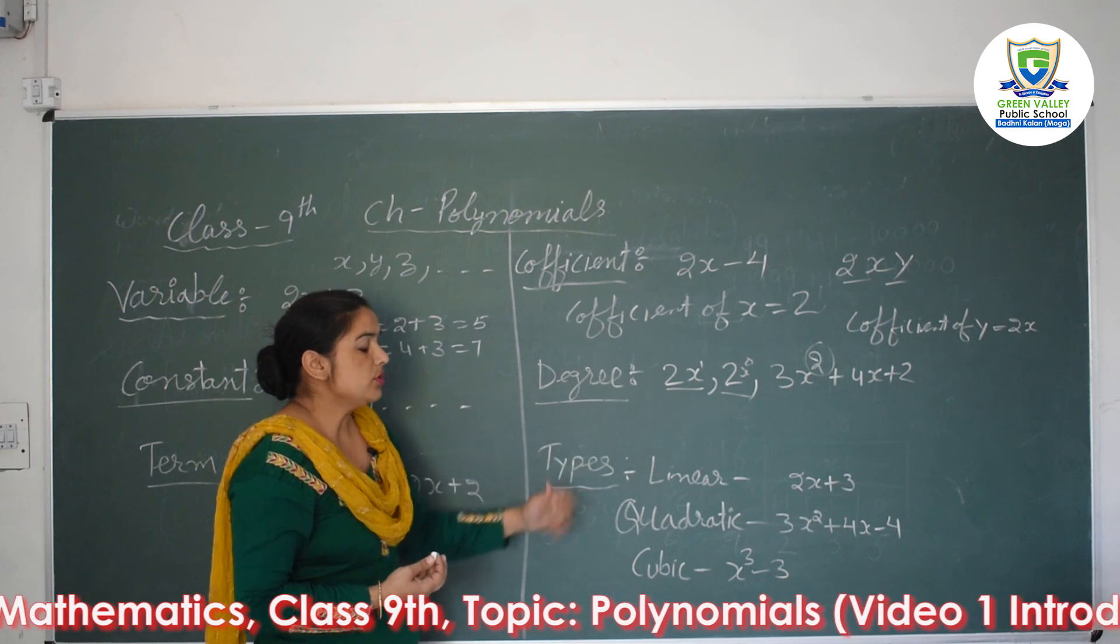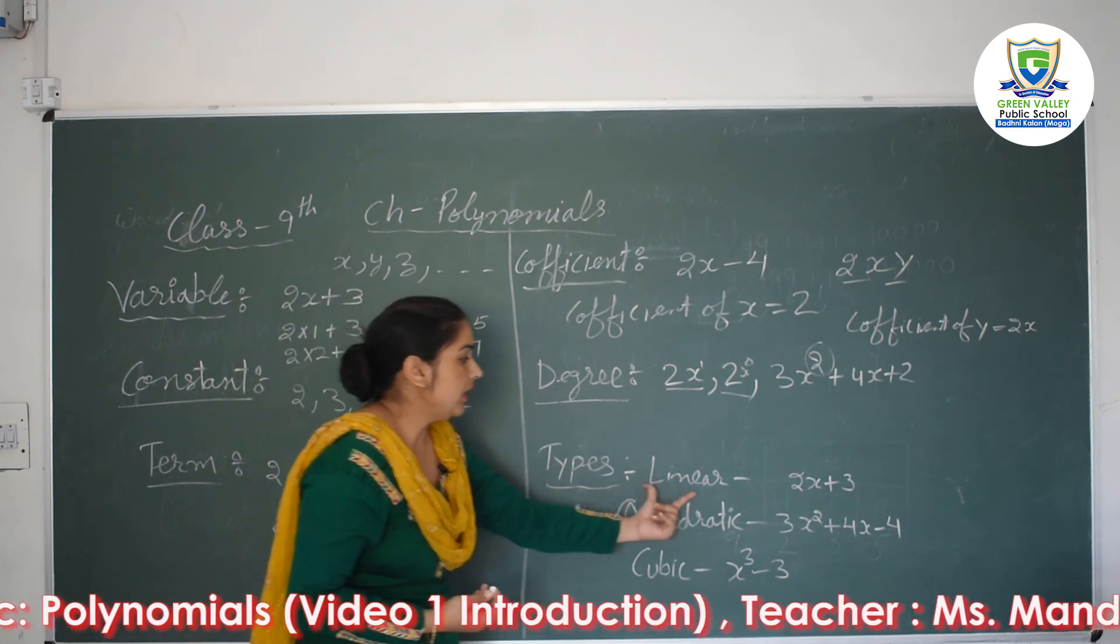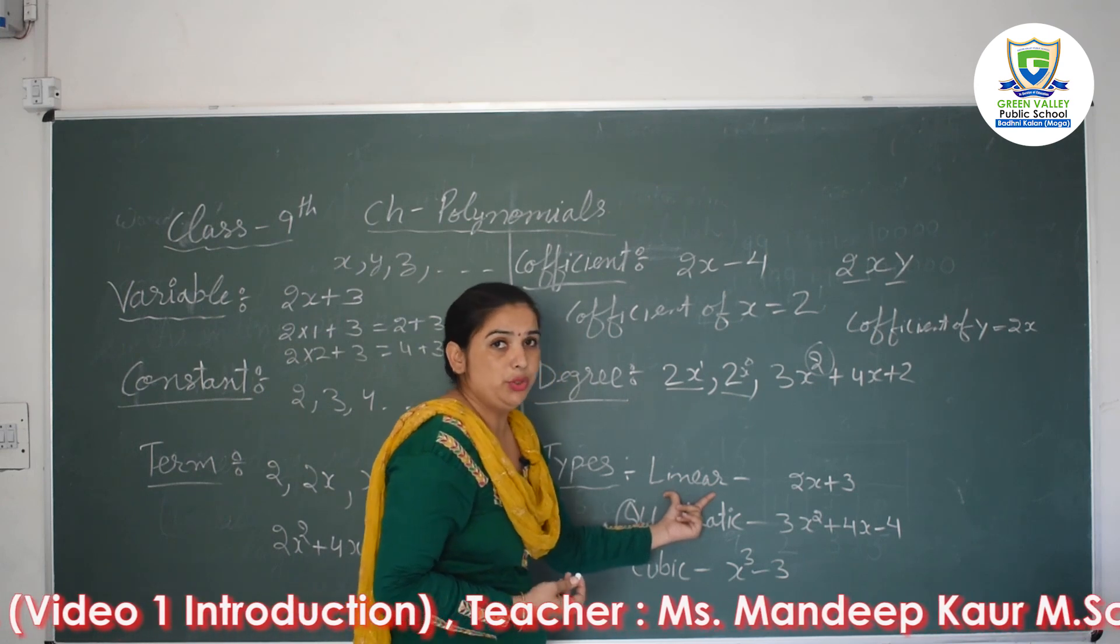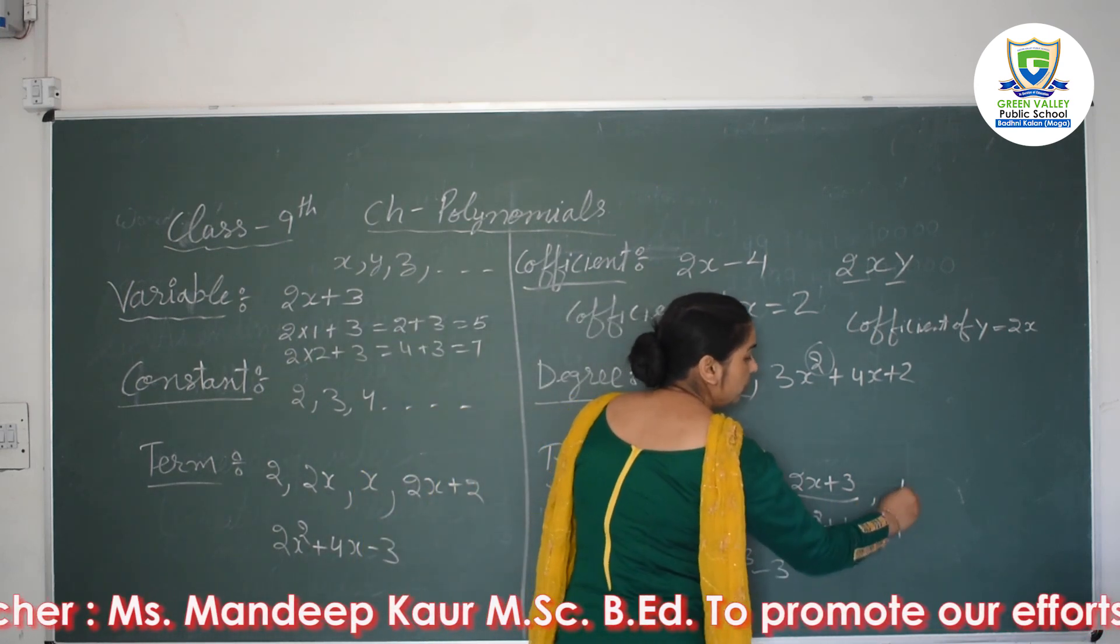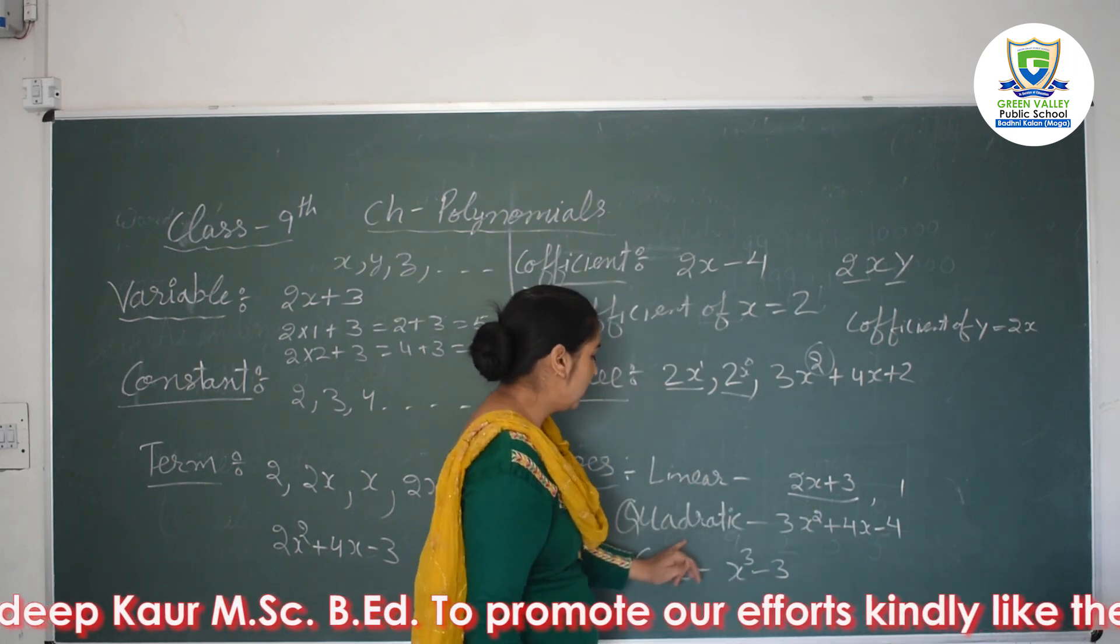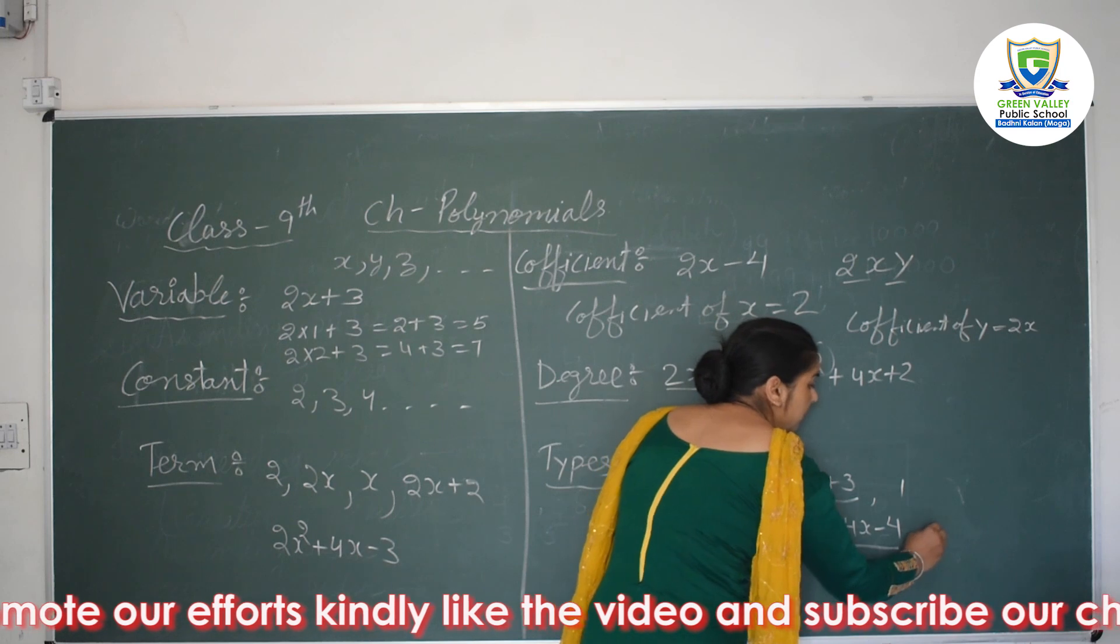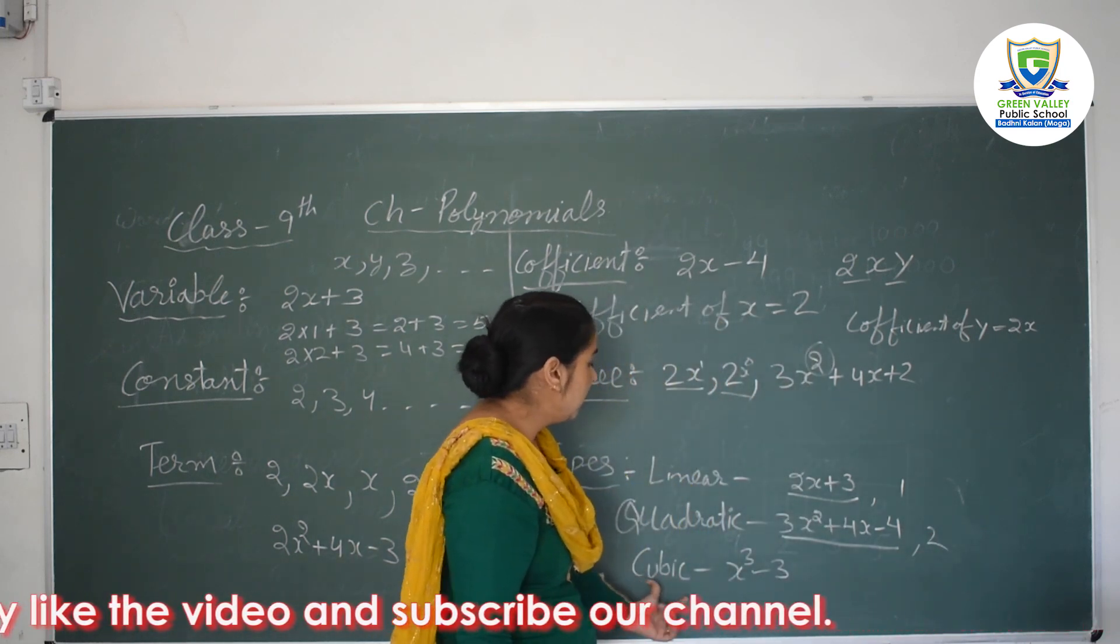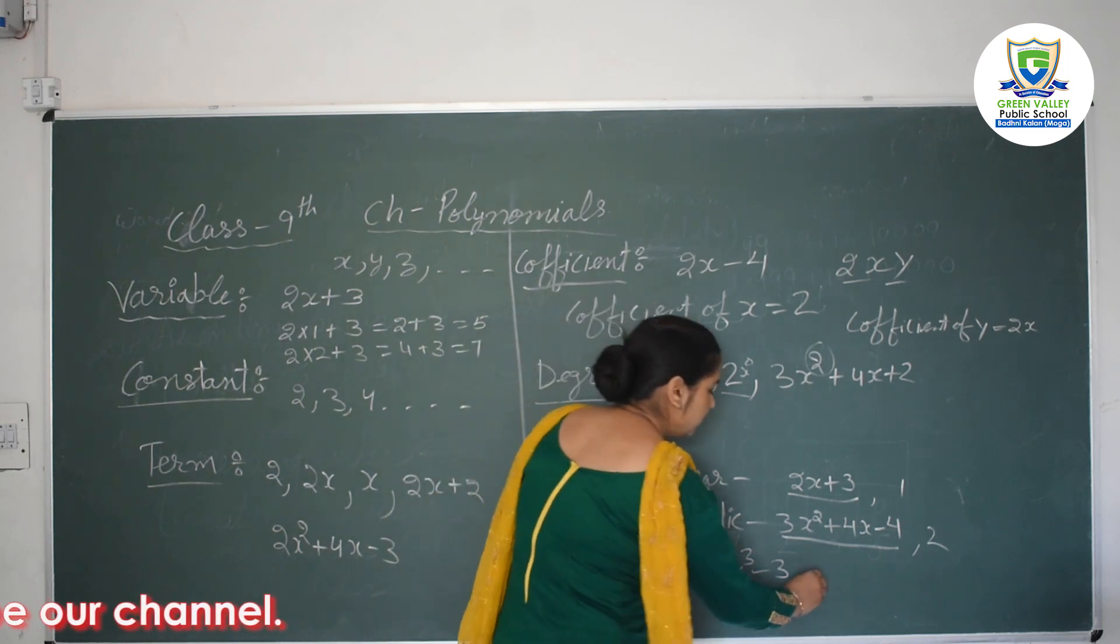And then student, based on the degree we have types of polynomial. Very first we have a linear polynomial, linear is where we have the degree of that polynomial is 1. Quadratic, in which the degree of polynomial is 2. And cubic, where you have degree of polynomial is 3.